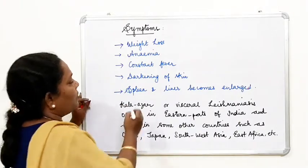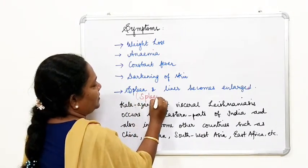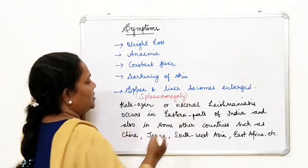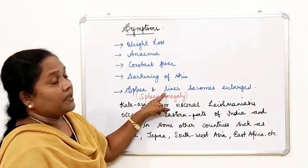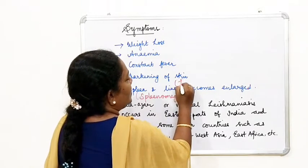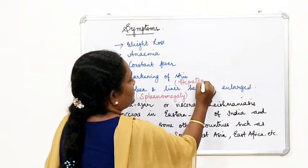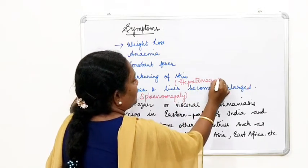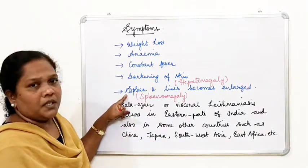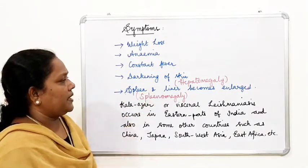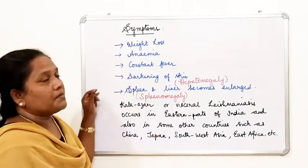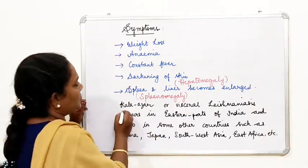The spleen and liver become enlarged. When the spleen is enlarged, this condition is called splenomegaly. When the liver becomes enlarged, it is called hepatomegaly. These are the key symptoms of Kala Azar.